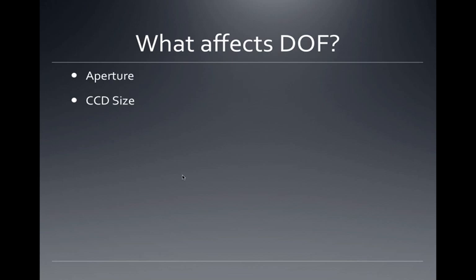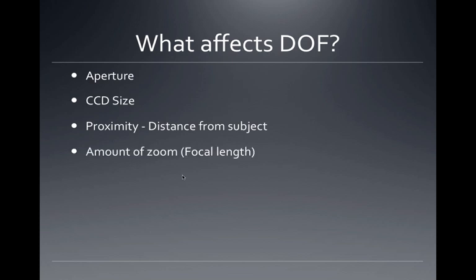But there are a couple other things we can do to affect depth of field. Proximity — the distance of the camera from the subject affects depth of field. The closer you are, the smaller the depth of field. So if you're really close to the subject, your depth of field is going to be smaller. Macro photography is where you get very close — easy to affect depth of field that way.